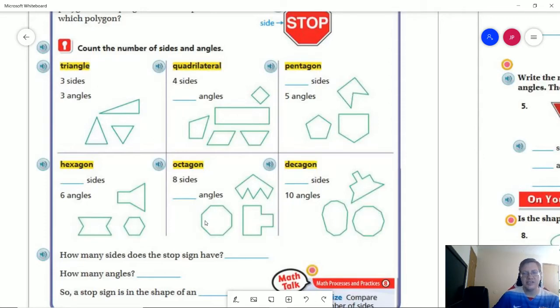So to complete this, a quadrilateral is a four-sided object that has four angles. A pentagon is a five-sided object that has five angles. A hexagon is a six-sided object with six angles. An octagon is an eight-sided object with eight angles. That is a very curious looking one. And a decagon is a ten-sided object with ten angles.